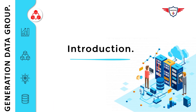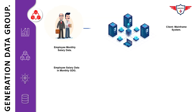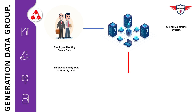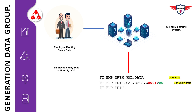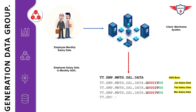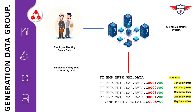A generation data group or GDG is a collection of two or more chronologically related versions of the same data set. They are generally used to maintain the backup of critical data — for example, monetary transactions. If something goes wrong, you can easily restore the data from the GDG backups and redo the processing from the same point.